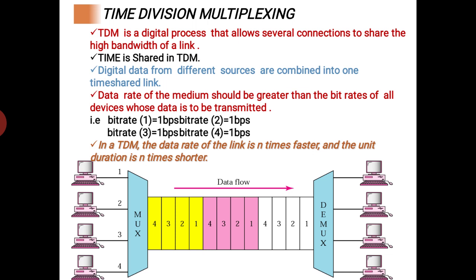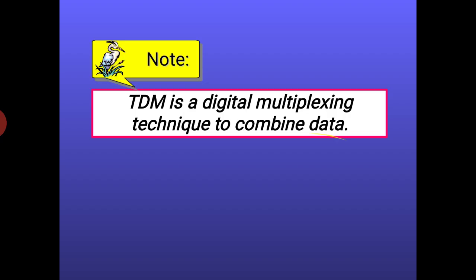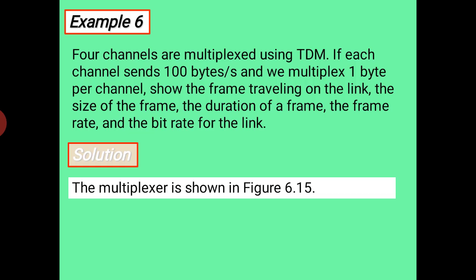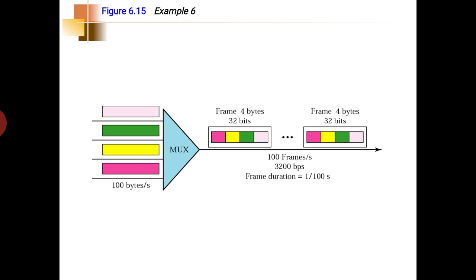With four devices, the time slots are four. One single column of white color is one time slot; four time slots of white color indicate one frame. Four pink time slots make frame number 2, and four yellow time slots make frame number 3. For a numerical: four channels are multiplexed using TDM, each channel sending 100 bytes per second, with 1 byte taken per channel at a time.